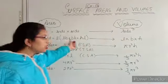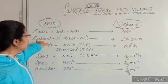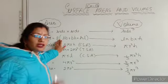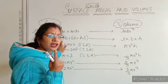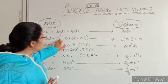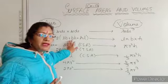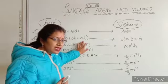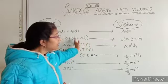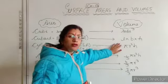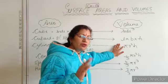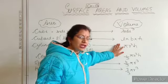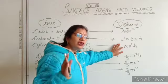Same way if you are taking a cuboid, what is the curved surface area? It is 2 times LB plus BH plus HL. And if you are finding the volume, volume of cuboid is length into breadth into height.